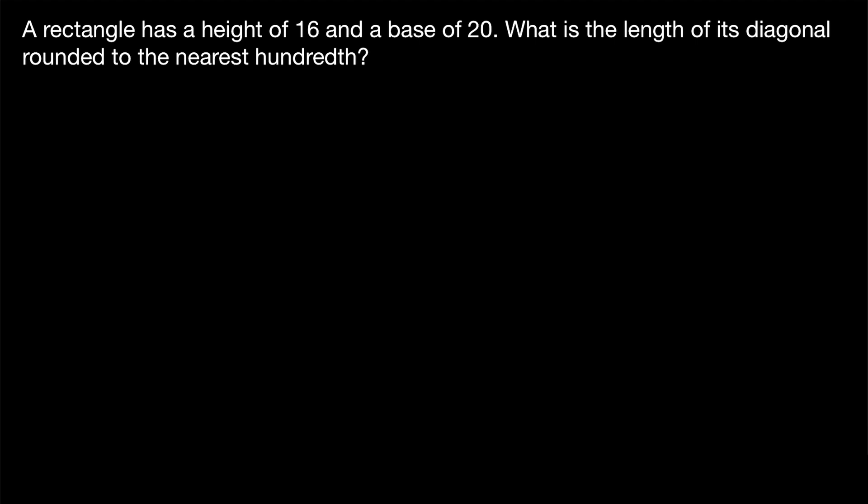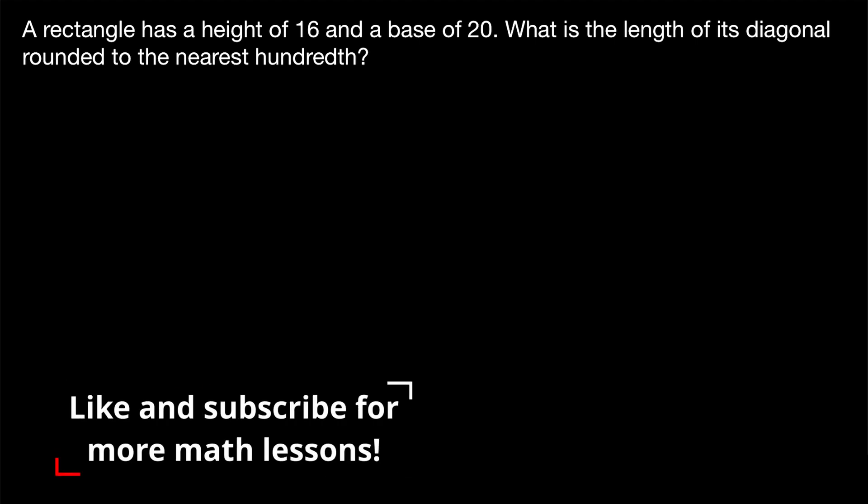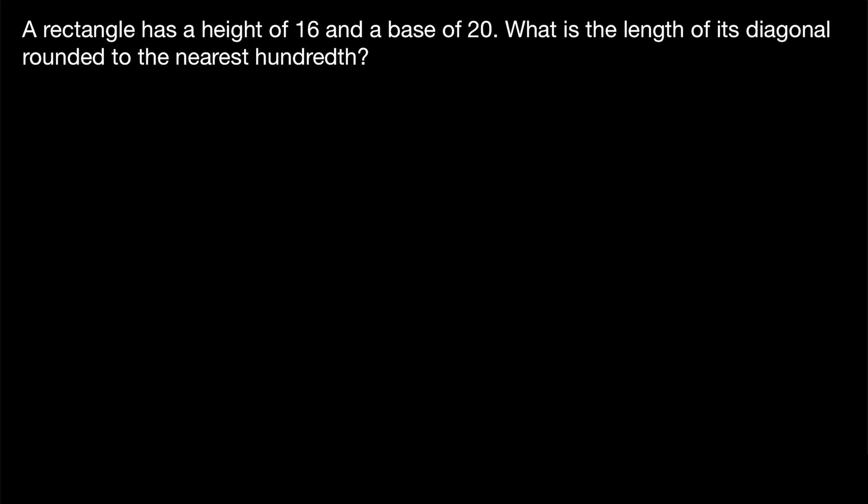We're going to go over six example problems that are about finding the diagonal of a rectangle. This will give us a look at some of the different ways a problem can be phrased and some of the slight differences between the problems. They're all very straightforward, so let's get into it.